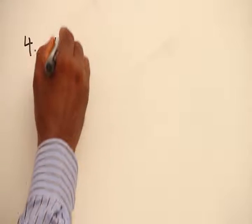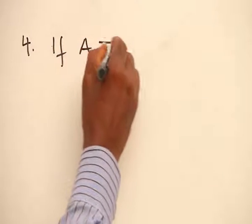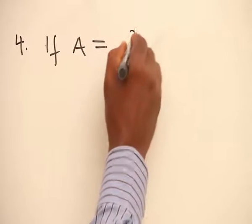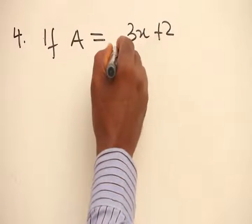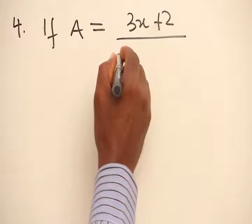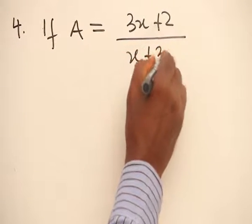Example 4. If A is equal to 3s plus 2 all over s plus 3.